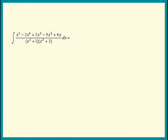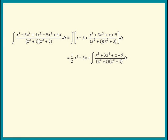The given integral is now equal to the integral of x minus 3 plus that fraction. We'll integrate the x and get 1 half x squared minus, integrate the 3, 3x plus the integral of the rest.